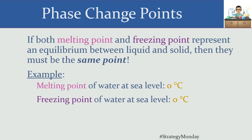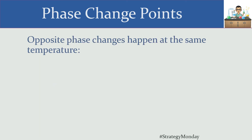Whenever we're talking about opposite phase changes strategically, you want to think about them as the same exact point. If certain changes occur to one of those phase change points, it must be happening to the other. For example, in colligative properties we talked about freezing point depression — I could have just as easily said melting point depression, because the freezing point and the melting point are the same exact thing. Opposite phase changes happen at the same temperature.